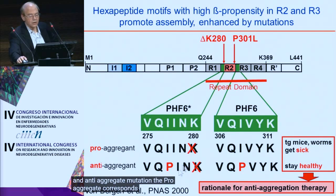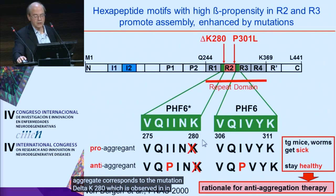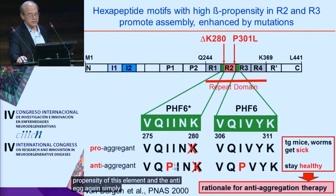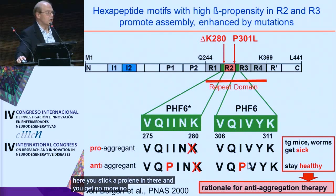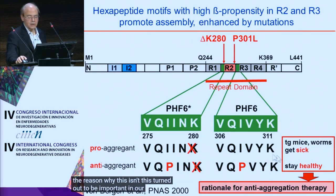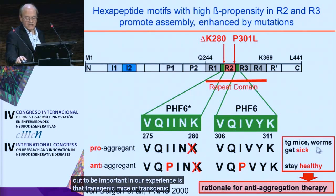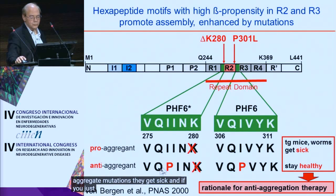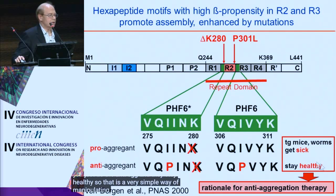The pro-aggregant corresponds to the mutation delta K280, which is observed in tauopathies and enhances the beta propensity of this element. For the anti-aggregant, you simply insert a proline, and you get no more aggregation. This turned out to be important in our experience: transgenic mice, worms, or transgenic anything — if they have pro-aggregant mutations, they get sick. If you use the anti-aggregant, they stay healthy. So that is a very simple way of manipulating the state of disease.